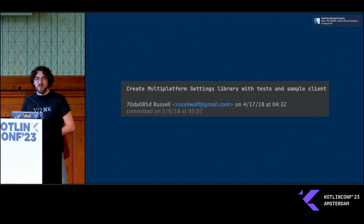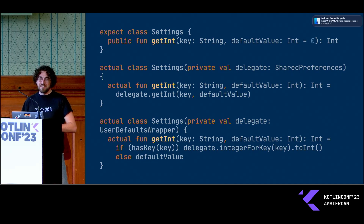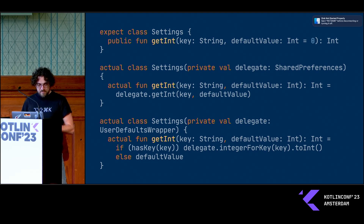It was about a month later before I put an actual release out. The first version of the API was an expect class called Settings that had a bunch of different APIs for different types — get and set for int, string, double, Boolean, etc. There were actual implementations for Android and for iOS that would delegate to Shared Preferences on Android and User Defaults on iOS.